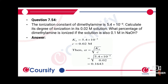For the 0.02M solution, we calculate alpha using the formula: alpha = √(Kb/C). Substituting values, alpha comes out to be 0.1643. Now we consider what percentage of dimethylamine is ionized if the solution is also 0.1M in NaOH.